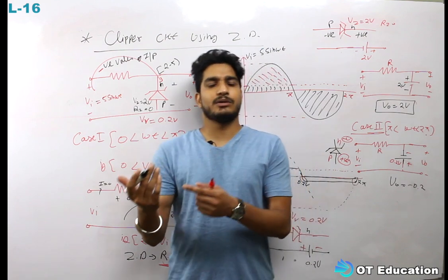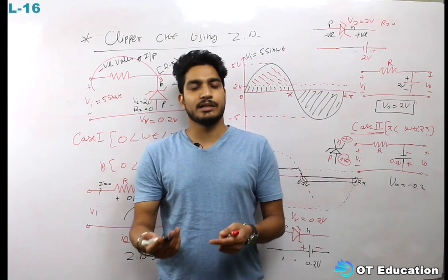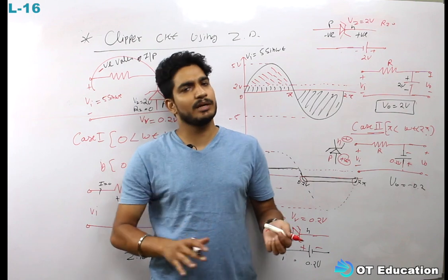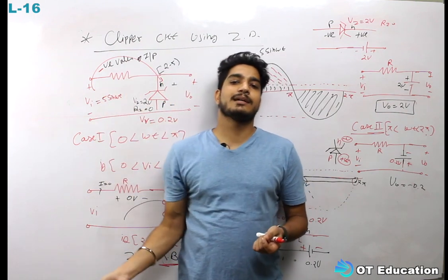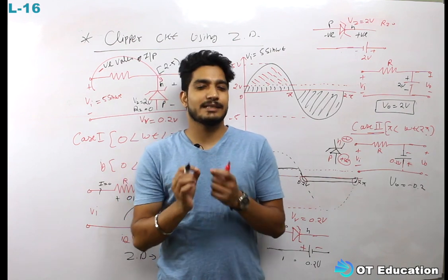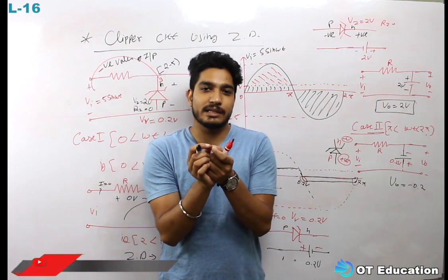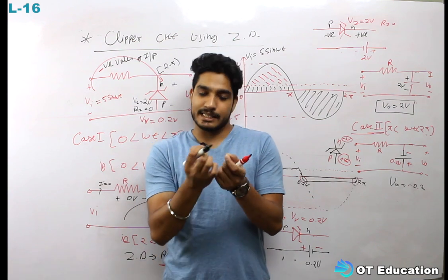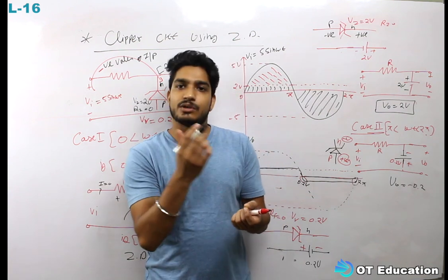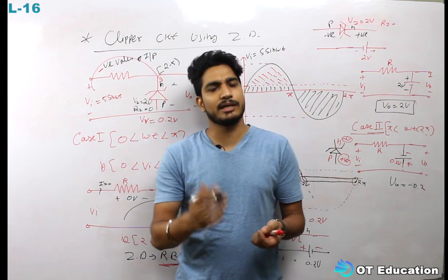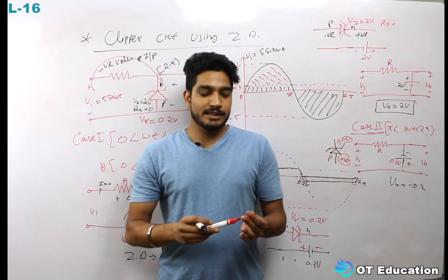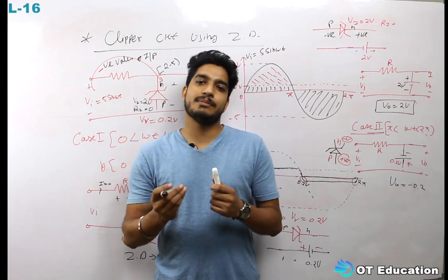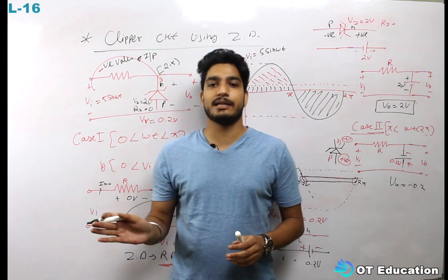There are some combinations — Zener diode cut-in voltage and Zener voltage are both involved. Sometimes two Zener diodes are used back-to-back. Different types of questions use this concept. Basically, if you have learned the basics, the questions will be easy. Key concepts to remember: polarity, Zener diode, normal diode, cut-in voltage, Zener voltage, and when the Zener diode is forward biased versus reverse biased. In the next class, we will start the Zener diode regulator circuit.